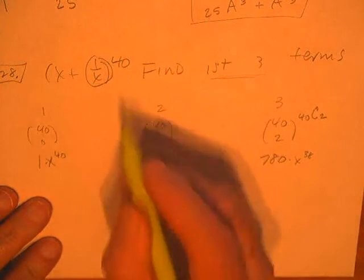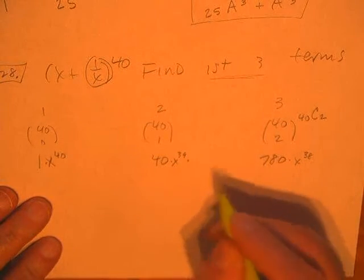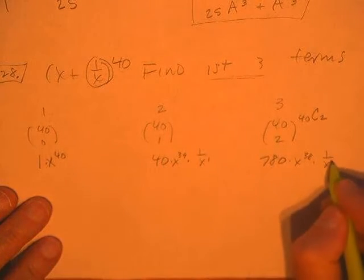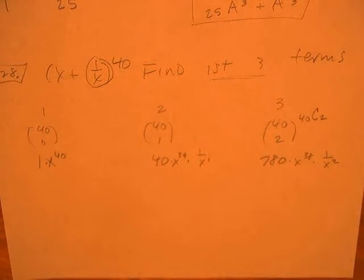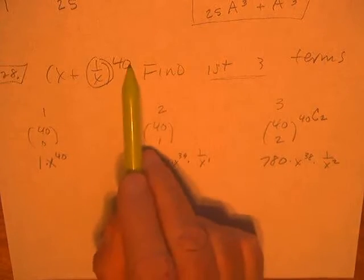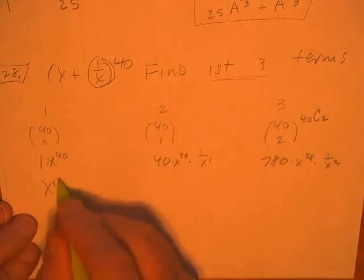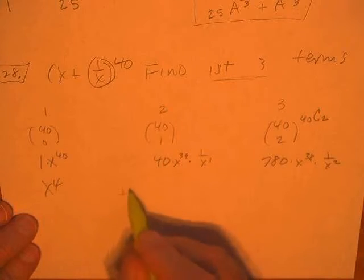Now for this one, I need to start on the second term and say 1 over X to the first and then 1 over X to the second because those are going to count up. It's going to be 1 over X to the 40th on the last term, but we don't want the last term. So there's the first term, so we're good on it.